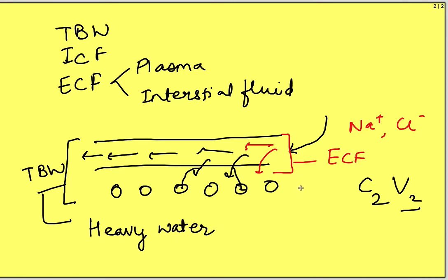If a substance remains only in the blood vessel — it cannot cross into the interstitial fluid and cannot enter into the cells — that means it remains only in the plasma. After determining its concentration, we will be able to determine the plasma volume. Radiolabelled albumin is used for this purpose because this protein cannot cross the capillary membrane and enter any other compartment.